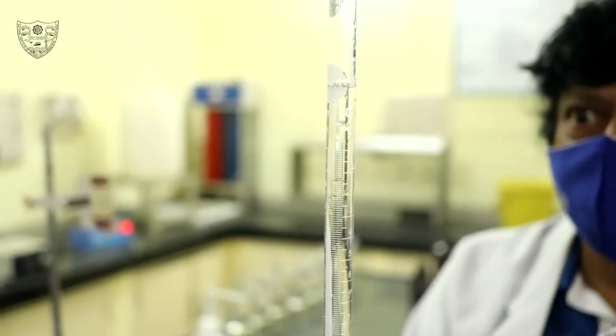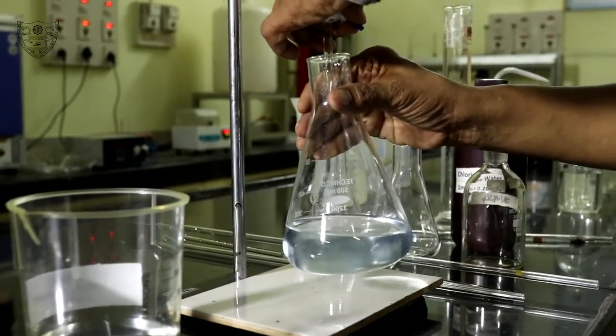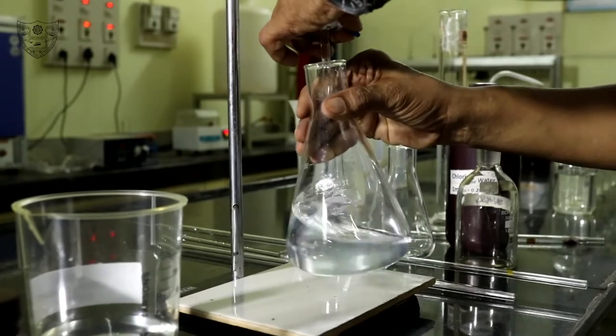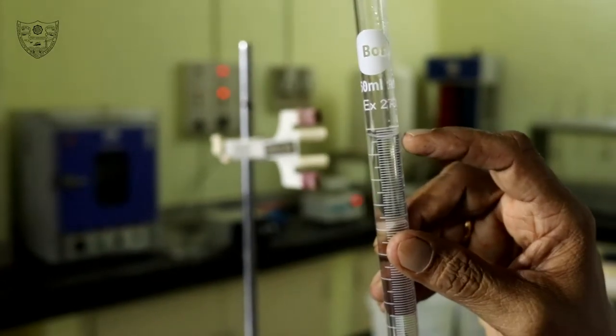Note down the initial reading. Titrate the sample against 0.01 normal sodium thiosulfate solution till blue color disappears. Note down the final volume.